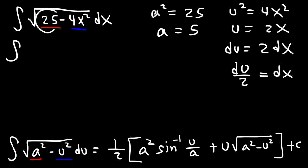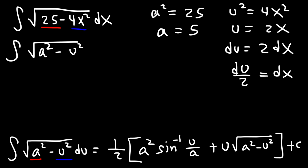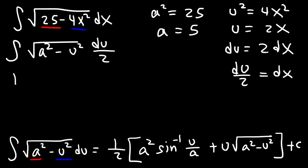Replace 25 with a squared and 4x squared with u squared. Then — this is the important step — replace dx with du over 2. Moving the constant one half to the front gives us one half times the integral of the square root of a squared minus u squared du.